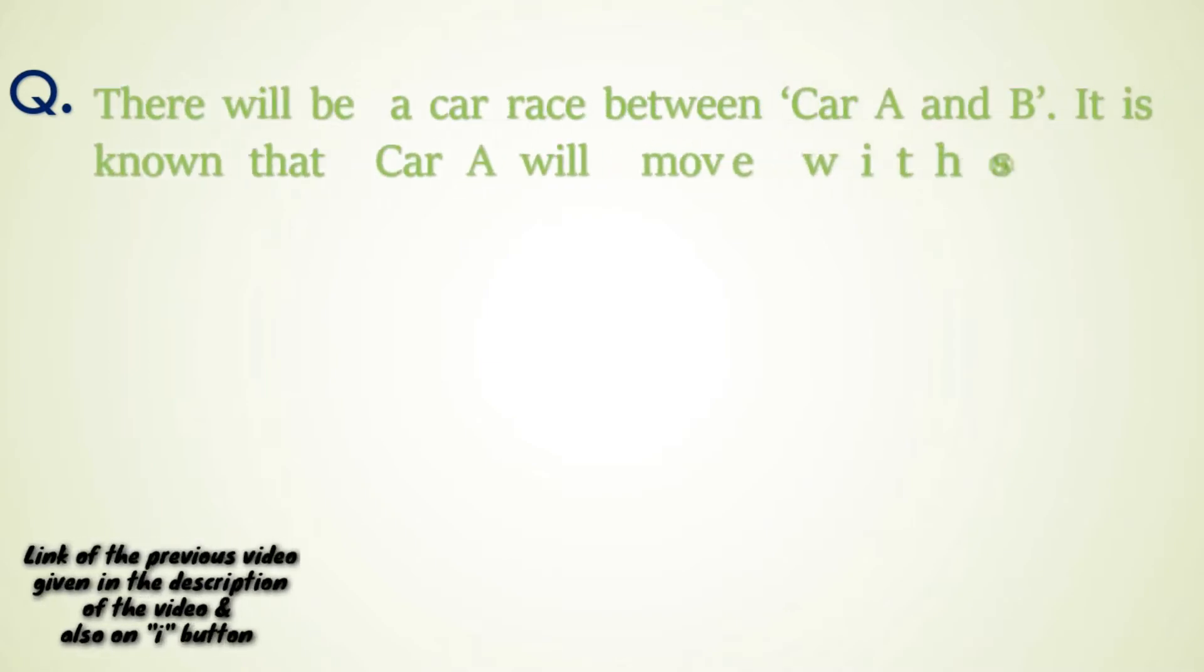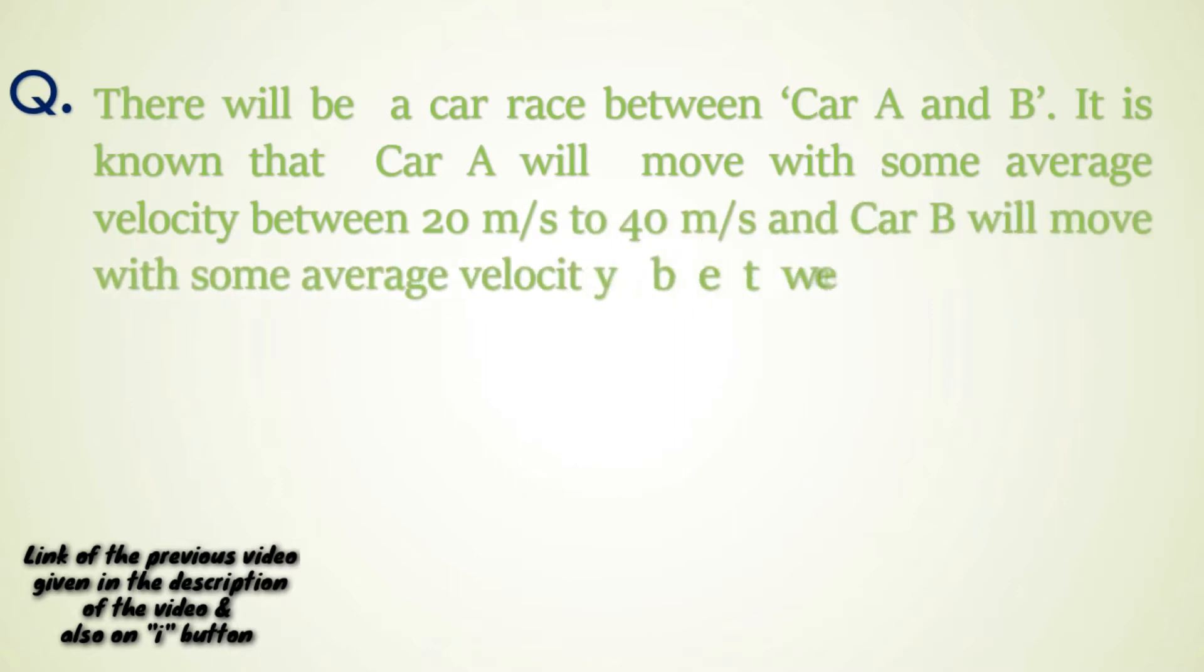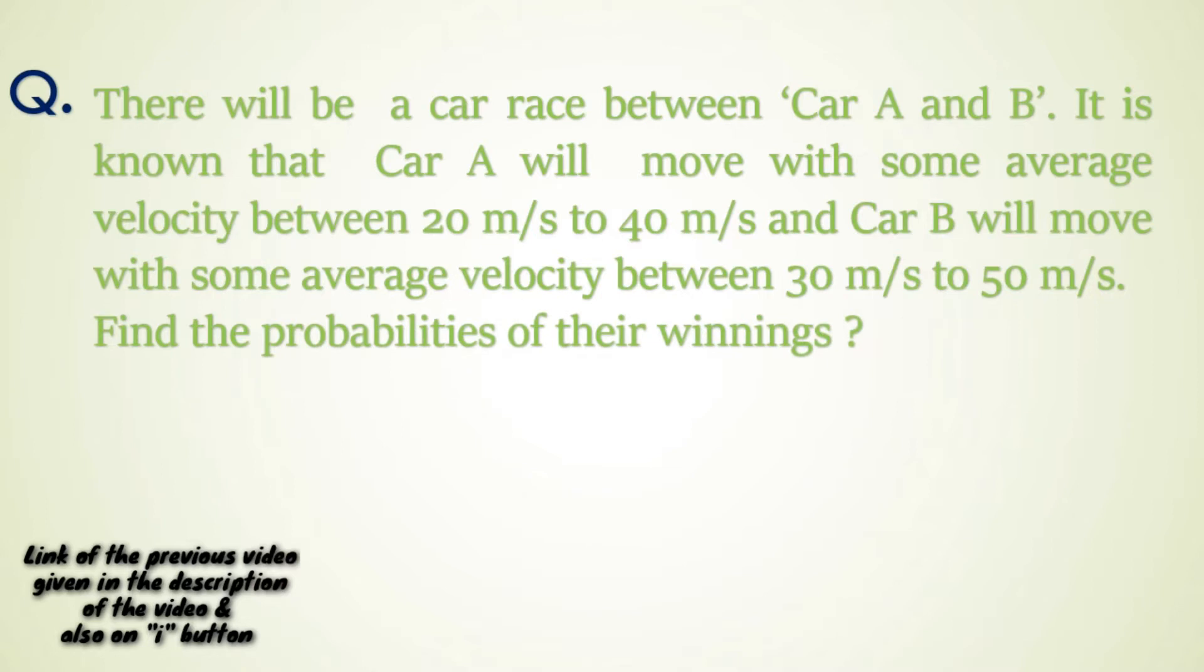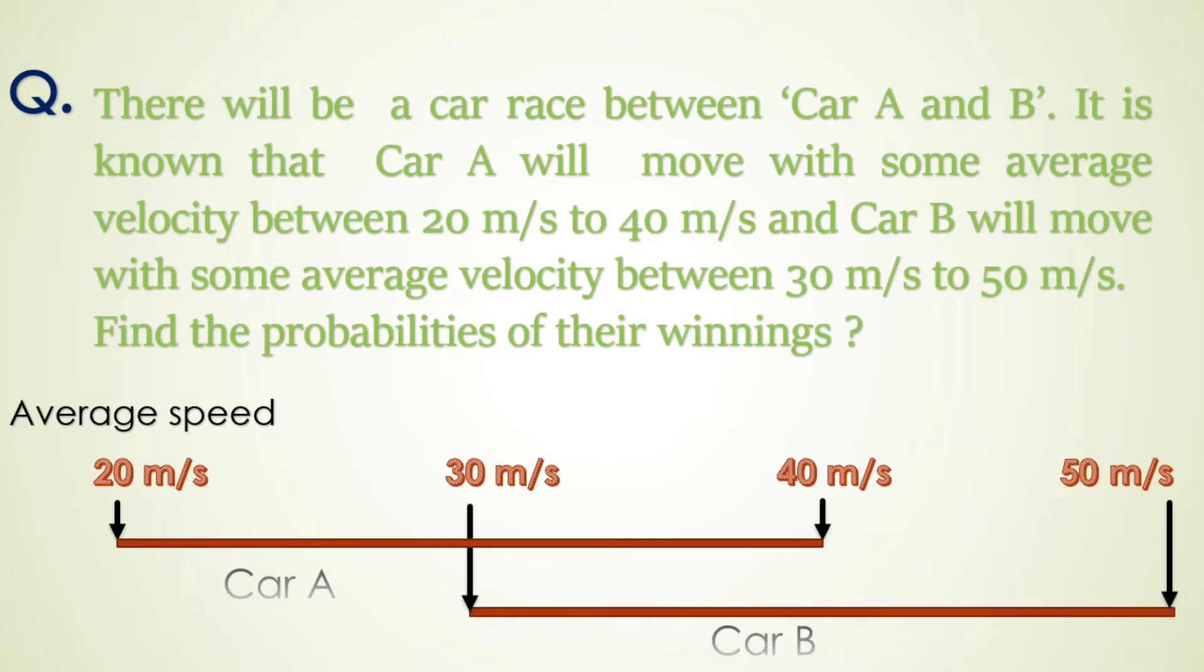Here is our previous question: There will be a car race between Car A and B. It is known that Car A will move with some average velocity between 20 m/s to 40 m/s, and Car B will move with some average velocity between 30 m/s to 50 m/s. Find the probabilities of their winnings.